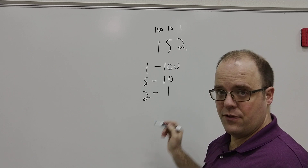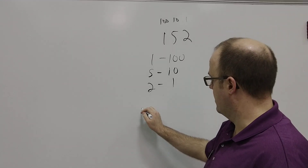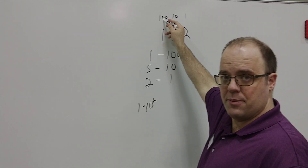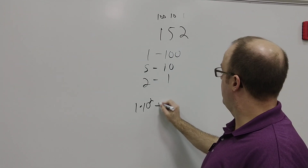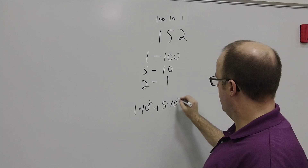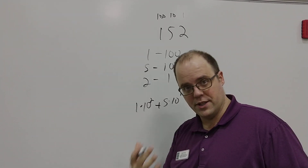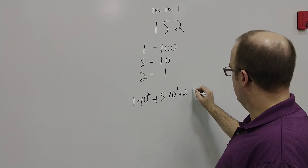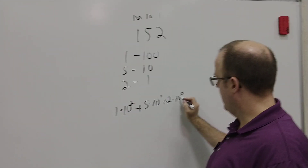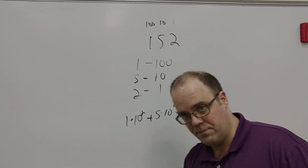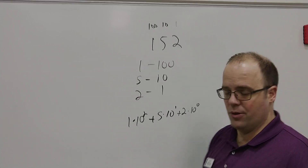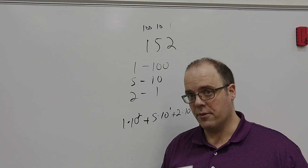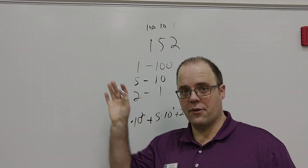I can simplify this even more into something that looks like this: 1 times 10 to the 2nd, because 10 times 10 is 10 to the 2nd, plus 5 times 10 to the 1st, which is 10 itself, plus 2 times 10 to the 0, and anything to the 0 power is 1. This is what we do — this is a base 10 system. Pretty straightforward, and we do this every day.